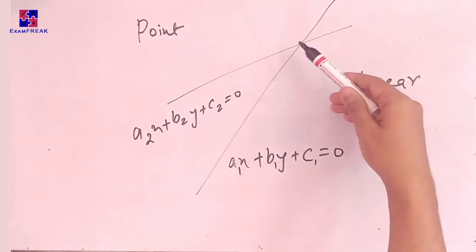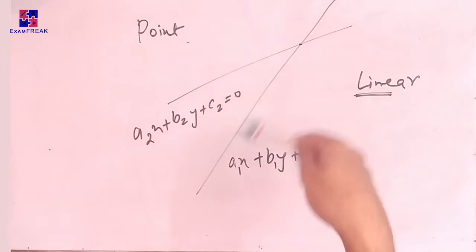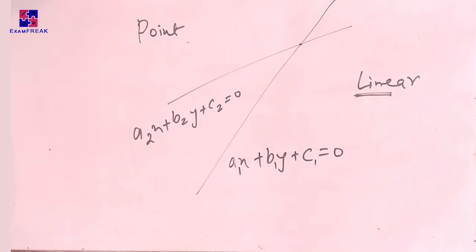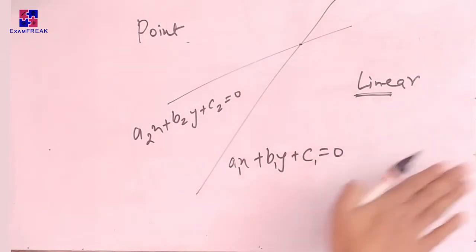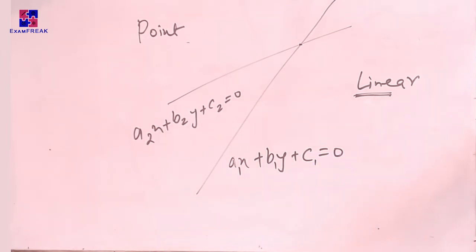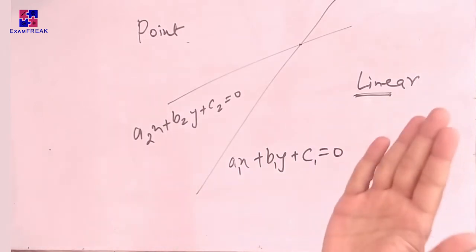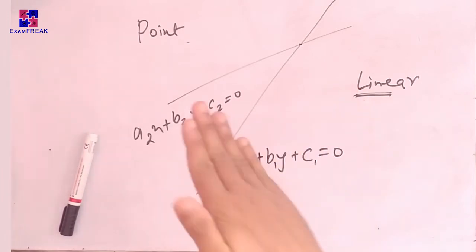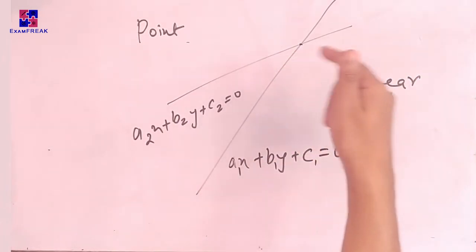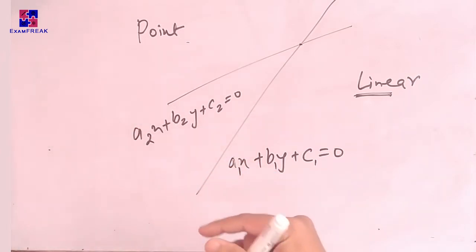So when two lines intersect at a point, we can define that point as the point of intersection of two lines. Now let us define a plane. A plane is any flat surface — for example, a table or the flat surface I am writing on. There can be an infinite number of planes; for different orientations there is one unique plane, meaning there are infinite planes. A plane contains an infinite number of straight lines and an infinite number of points on that flat surface.